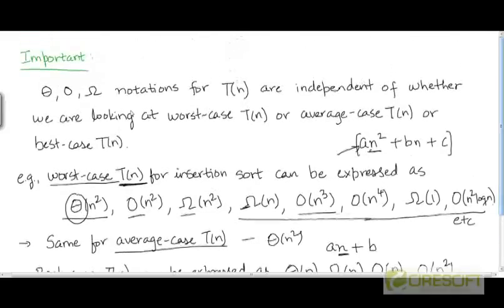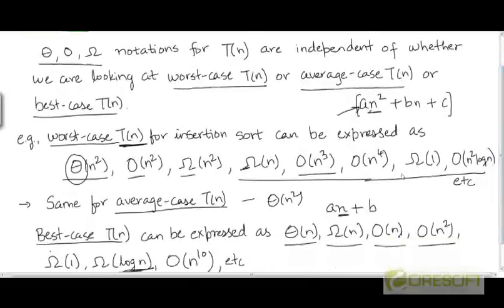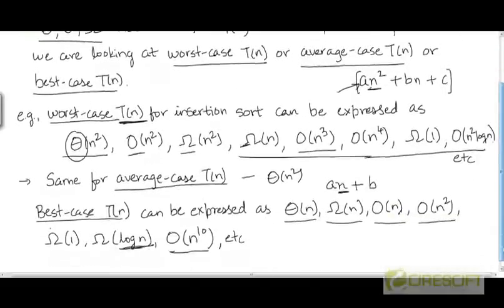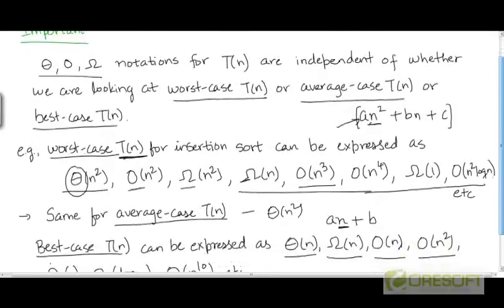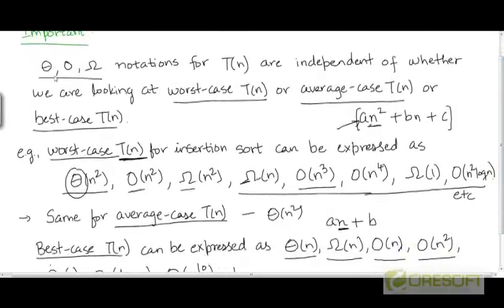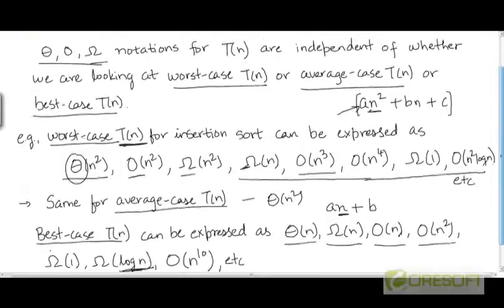These three notations can be used to represent any of these three running times in a variety of ways, especially the O and omega notations. So we shouldn't associate these notations only with the worst case time, best case time, or average case time — they can represent any of the running times that will be of concern to us.